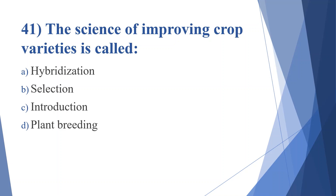Forty-first question: the science of improving crop varieties is called. Option A: hybridization. Option B: selection. Option C: introduction. Option D: plant breeding. Answer is option A, hybridization.